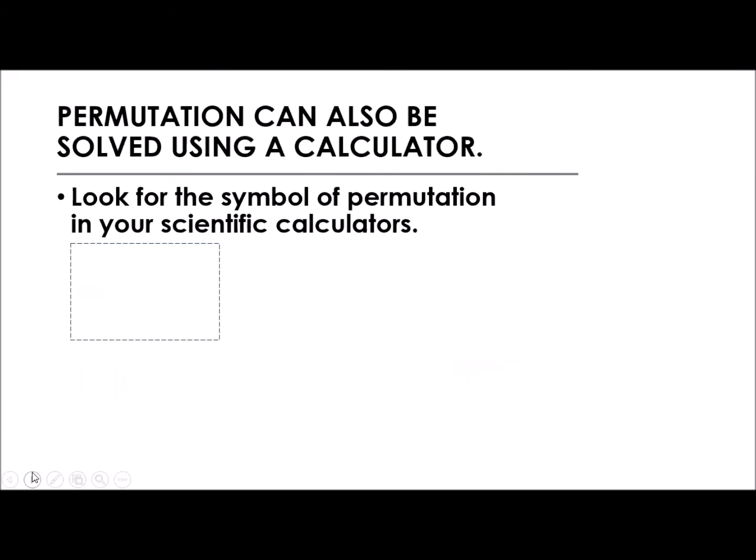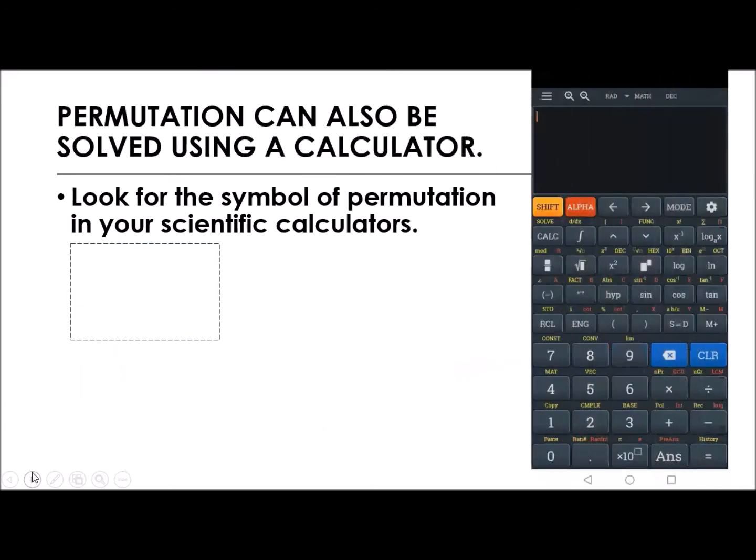So that is solving permutation manually. How about if we have scientific calculators on hand or even in your phones? We could apply that. First, you need to look for the symbol of permutation in your scientific calculators. For my scientific calculator, it is on top of the multiplication sign.